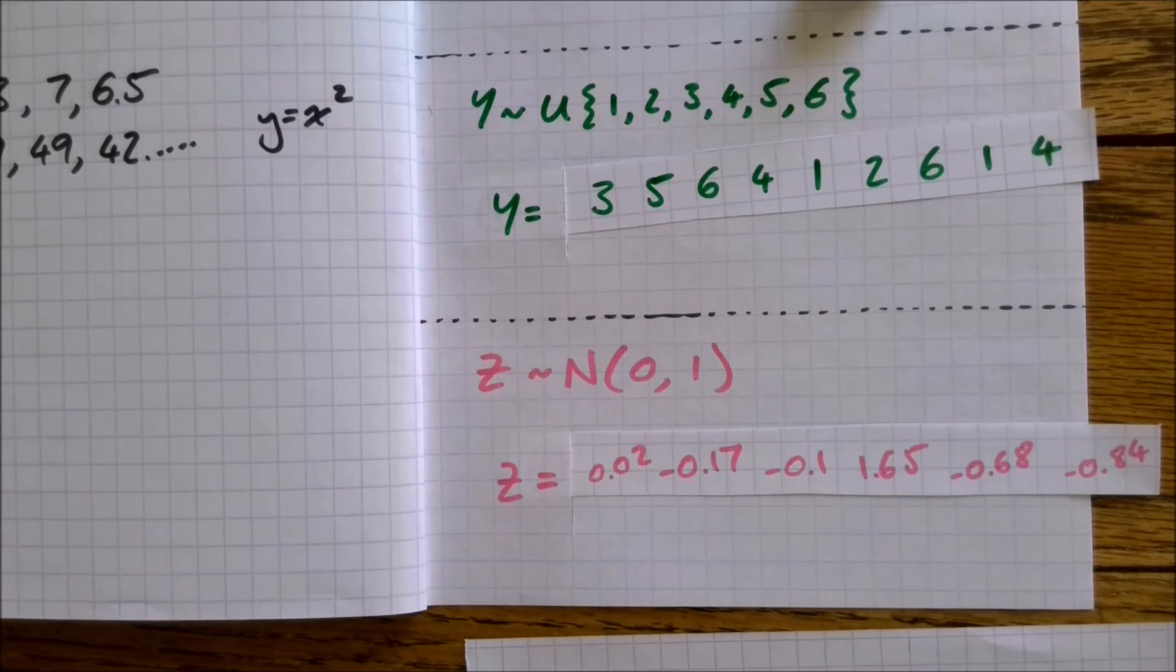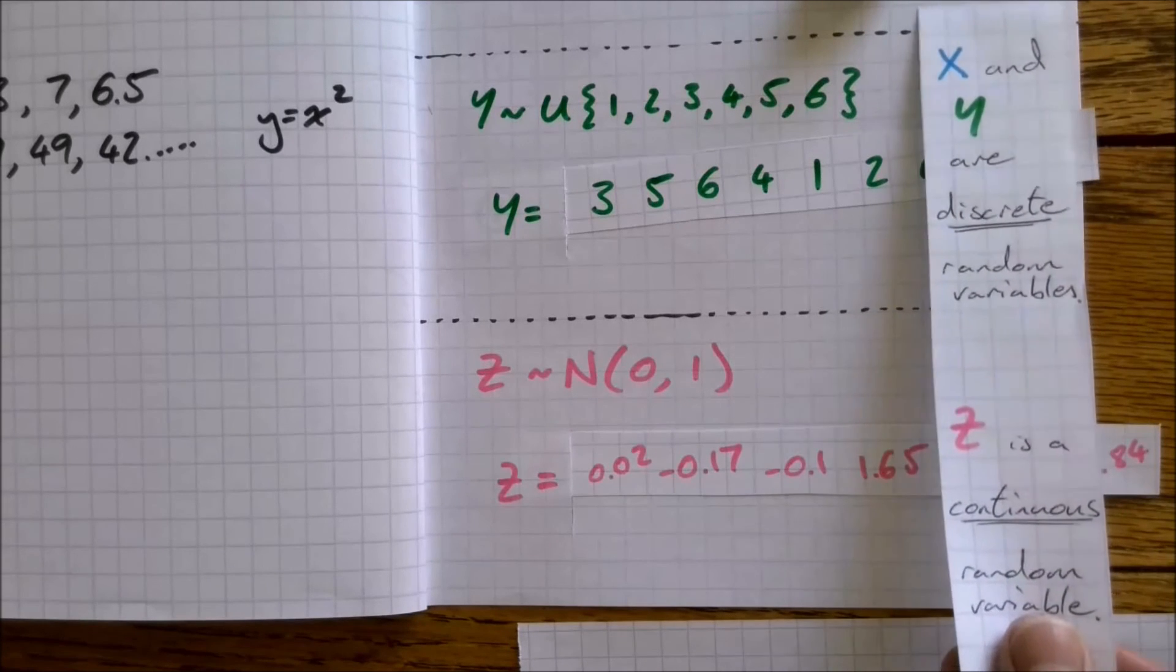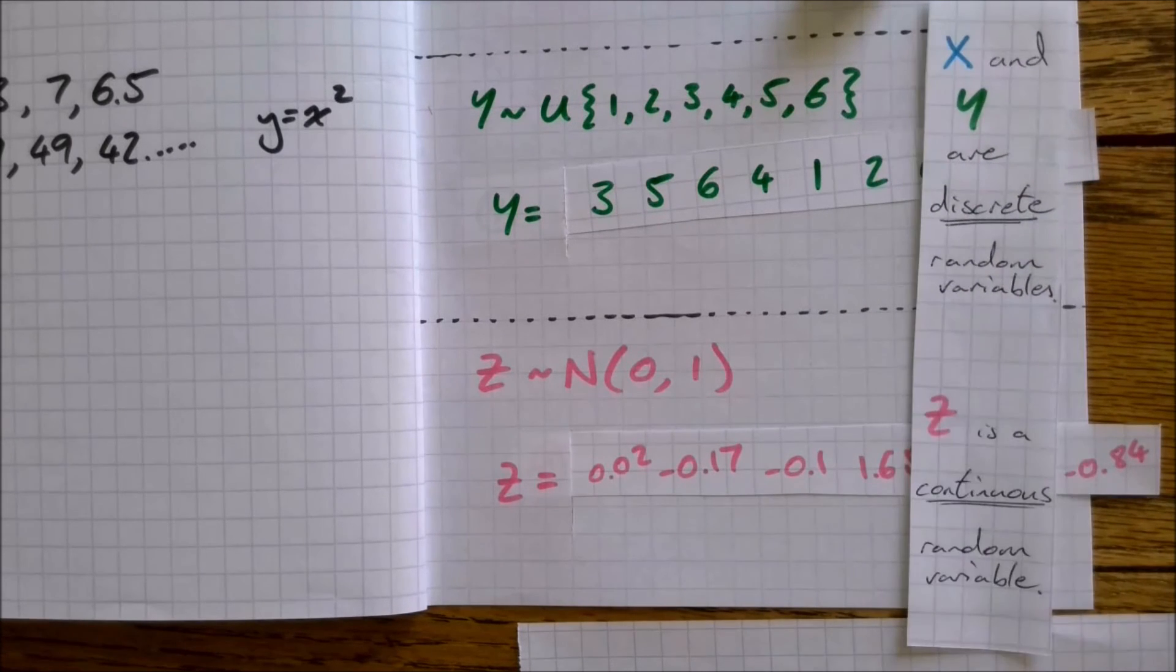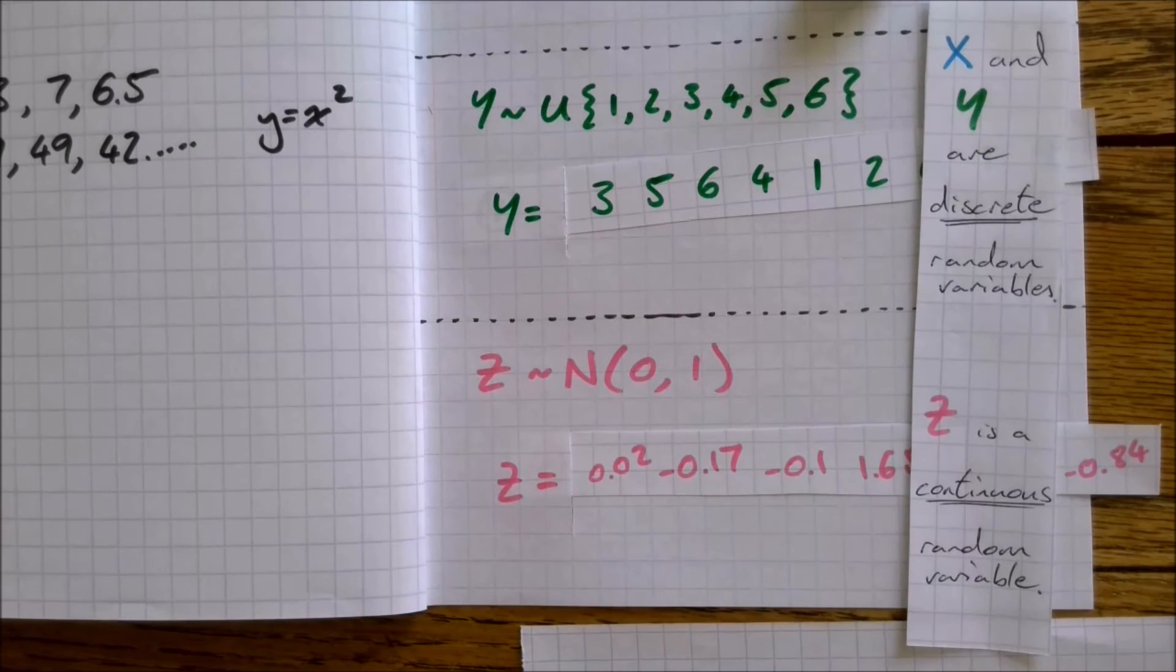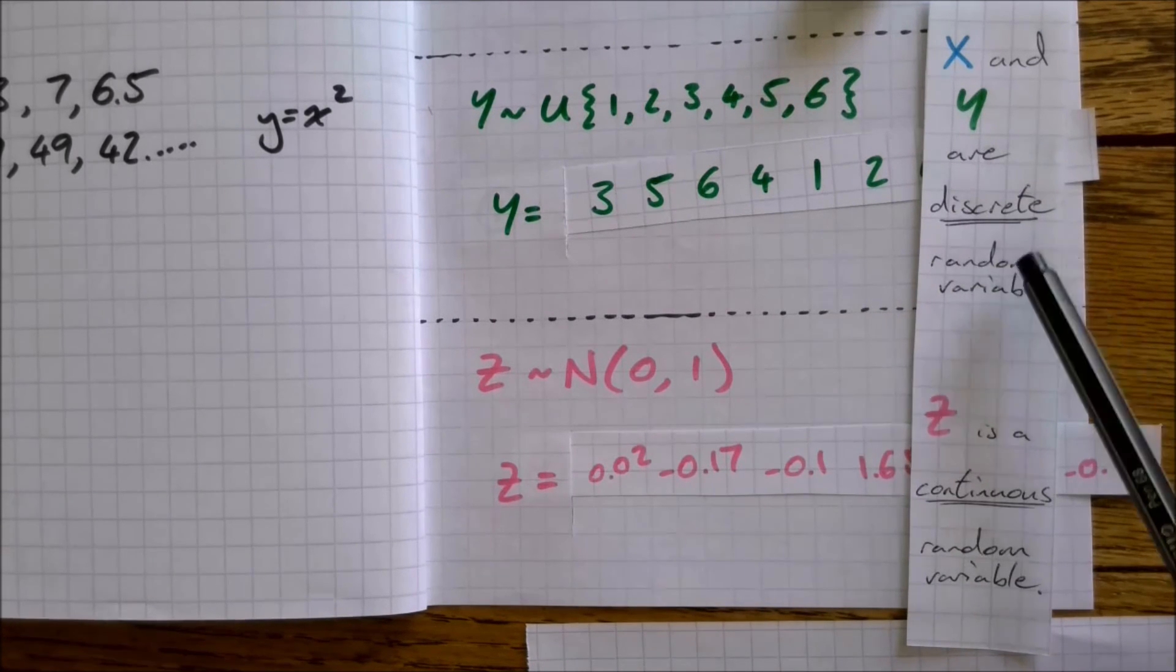I've gotten them from an actual normal random variable generator on the internet. You'll notice that the decimal numbers, these have actually all been rounded as well. Normal random variables are examples of continuous random variables, so that they can take any number on the number line. It's like continuous and discrete data at GCSE. x and y being discrete can only take particular values.